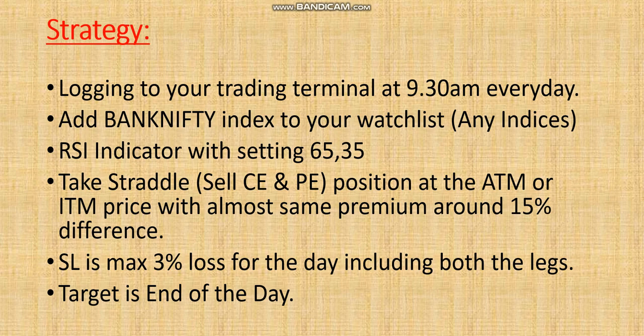The strategy is simple. Log into your trading terminal at 9:15 and add Bank Nifty index to your watchlist. Also add the RSI indicator with settings: overbought at 65 and oversold at 35. Once you get the three indications — which I'll show you on the chart — you enter a straddle position, that is sell call and sell PE at the ATM strike price. If taking ITM, go for a strangle and make sure premiums are very close to each other, no more than 15% difference. Stop loss should be a maximum 3% loss for the day across both legs.